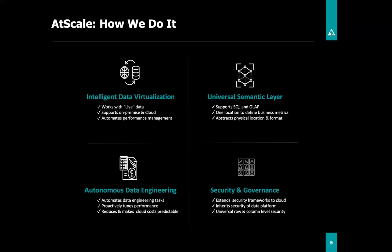Our core IP includes a data virtualization engine that queries data where it is — there is no loading data into AtScale. We pass queries right down to the underlying data stores and hide complexity from users. We have a universal semantic layer, meaning whether you're querying with OLAP through tools like Excel and Power BI, or through SQL with tools like Tableau, everybody gets the same answer. Autonomous data engineering eliminates laborious manual ETL using AI, and we do all of this with a security and governance layer ensuring people can only see the data they're supposed to see.